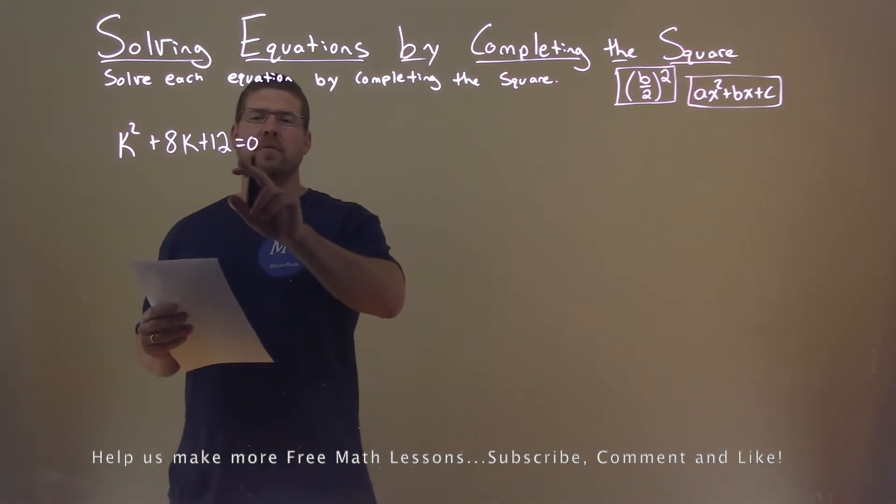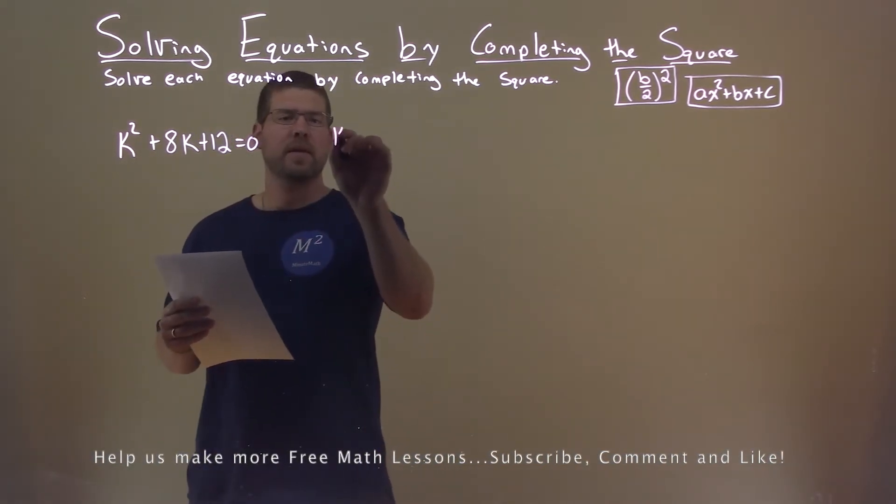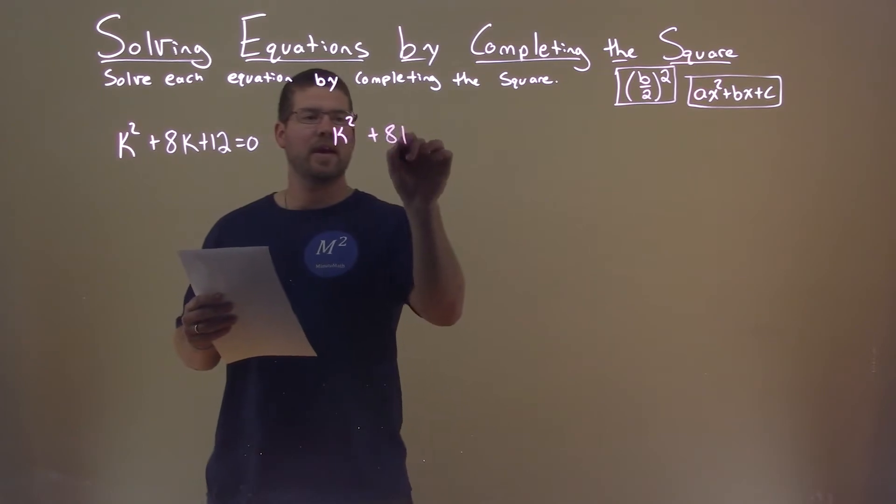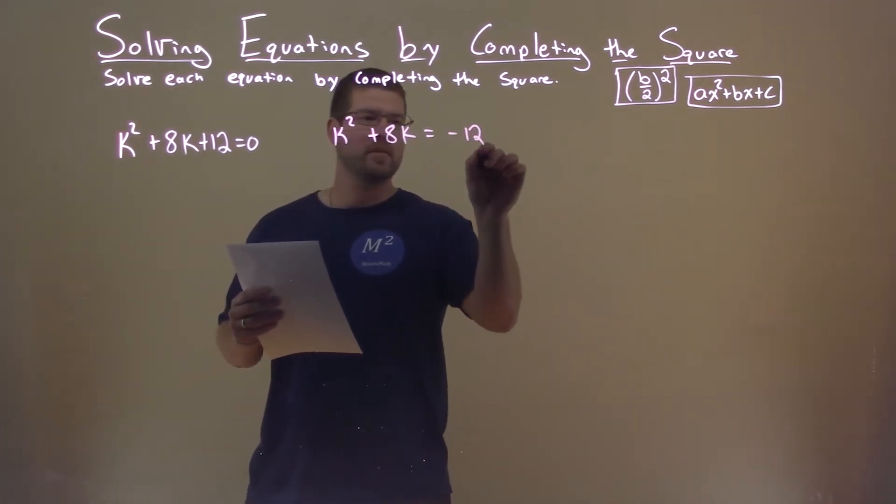First thing I'm going to do is subtract the 12 to both sides of the equal sign. That leaves me with k squared plus 8k equals negative 12.